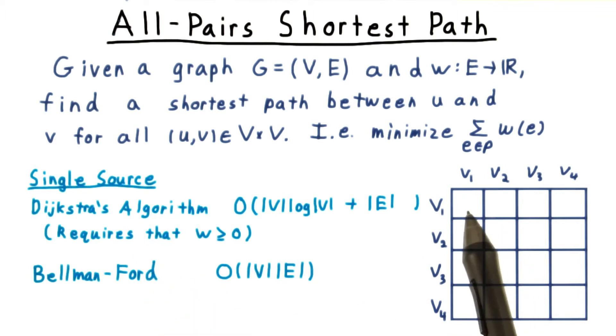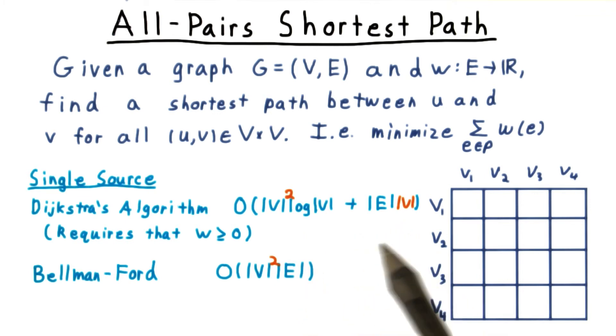One call to the algorithm to fill out one row of the table. This strategy involves running each of these algorithms V times, so we can just add a factor of V to their running times to get the all pairs shortest path version.